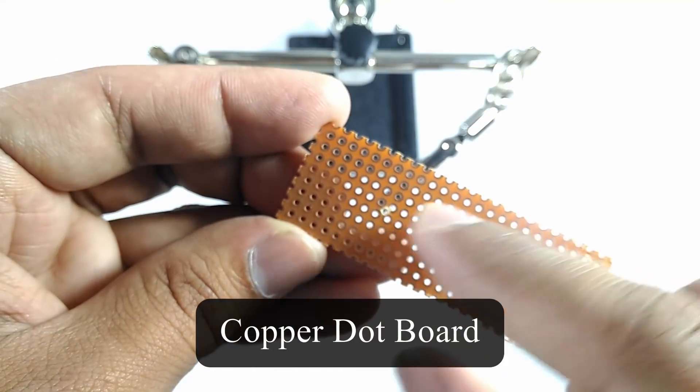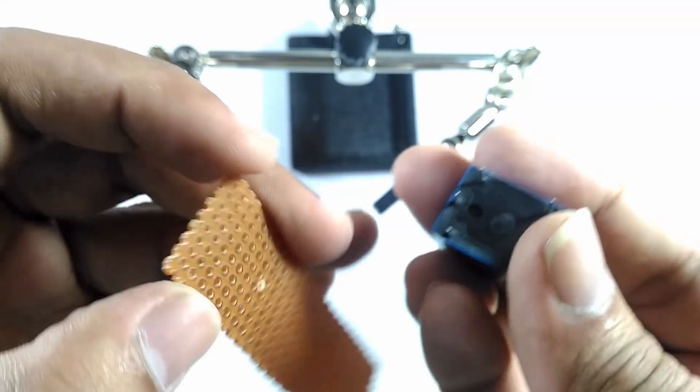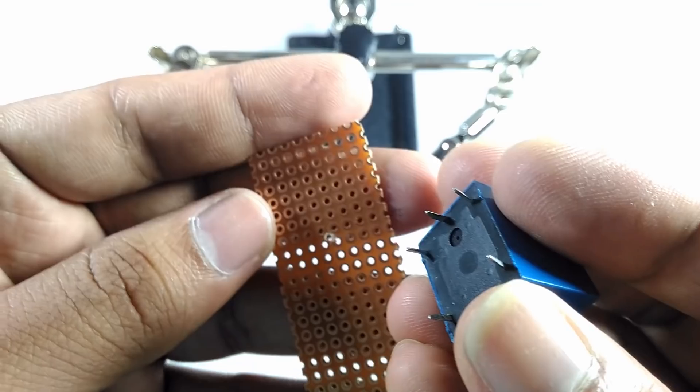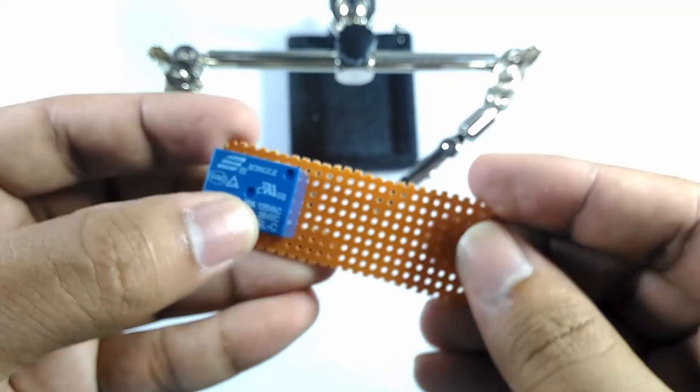We need a copper dot board in order to hold the components in place. I drilled a small hole so that all the contacts of the relay can be fixed into the dot board.